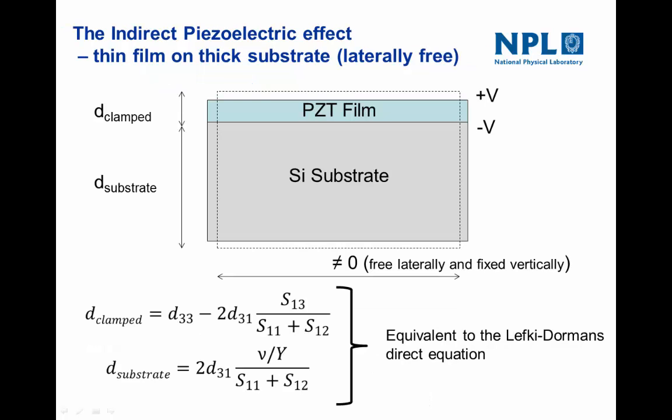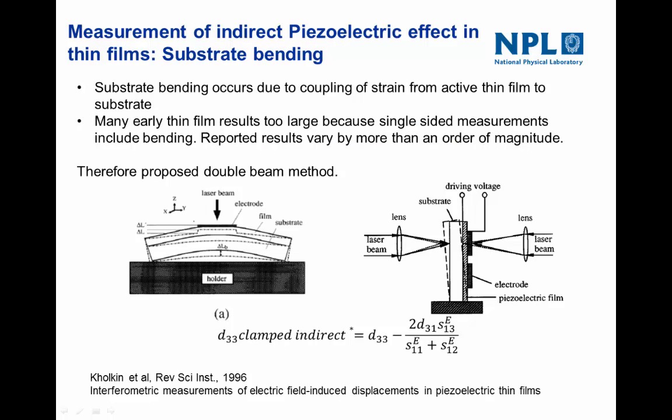Now a slightly more realistic case: we free the lateral constraint but it's still fixed vertically so it can't bend. The film behaves as before, but because the boundary condition is freed at the bottom, the silicon substrate can also change thickness. The two equations below describe this: the first gives how much the film changes as before, and the second gives how much the substrate changes thickness. The substrate contraction depends on the D31 of the piezoelectric material, as well as the Poisson's ratio and modulus of the substrate.